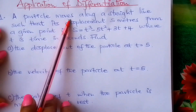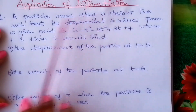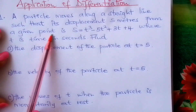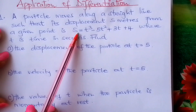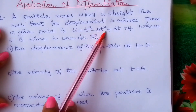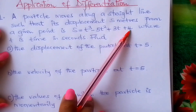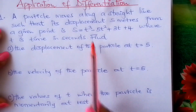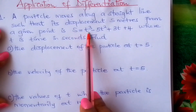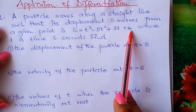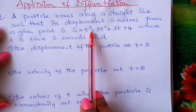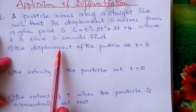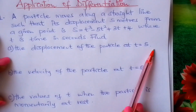A particle moves along a straight line such that its displacement s meters from a given point is s equals t cubed minus 5t squared plus 3t plus 4, where t is time in seconds. This is the expression for displacement in terms of t. Find the displacement of the particle at t equals 5.